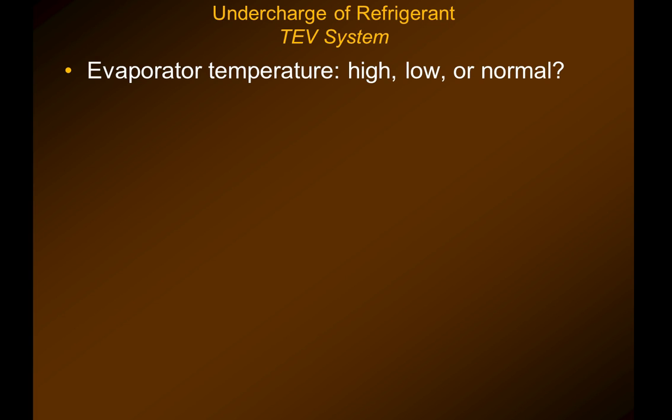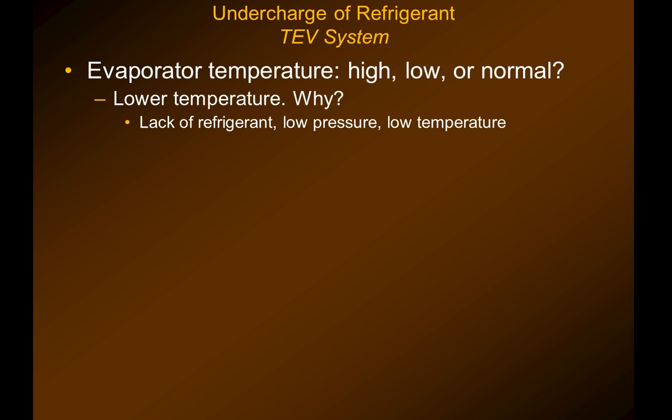So the evaporator temperature — is it going to be high, low, or normal? It's going to have a lower than normal evaporator temperature. That's due to the lack of refrigerant, which causes low pressure. And because of the temperature-pressure relationship, there is also going to be a lower temperature in the evaporator coil. That's why in residential air conditioning, sometimes you see the coil freezing when there's an undercharge.